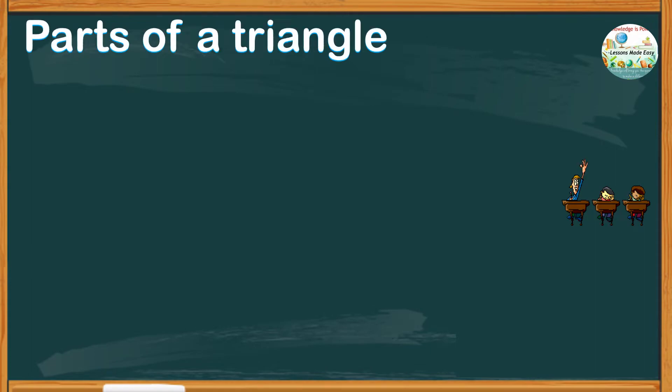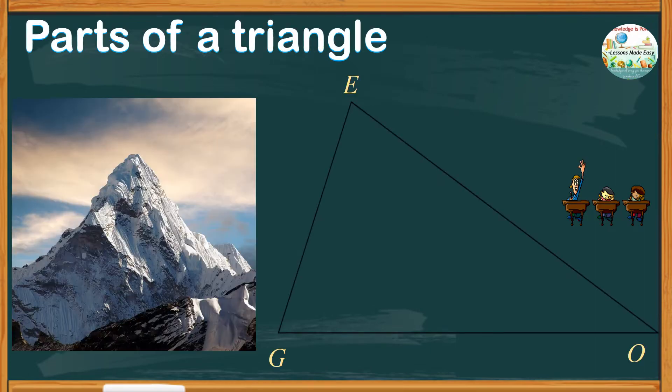Parts of a triangle. Basically, a triangle is just like a mountain, where the part that is parallel to the ground is called the base.